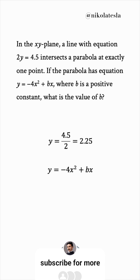We can find the intersection point from the equation negative 4x squared plus bx equals 2.25. Let's move the 2.25 to the other side so that this becomes the typical quadratic equation structure we are familiar with.